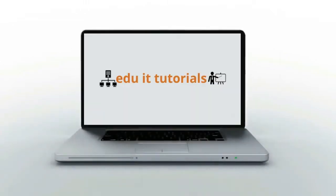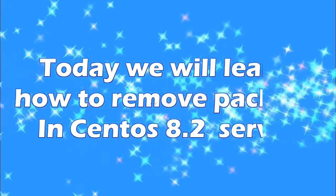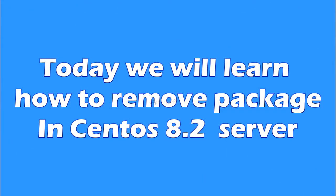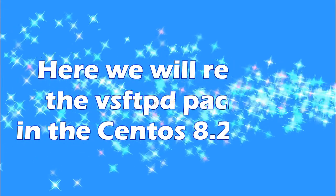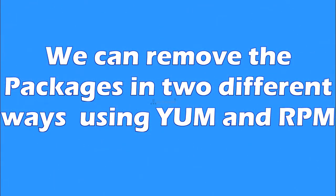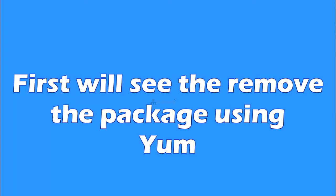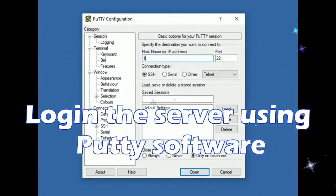Welcome to EduID tutorials. Please subscribe to my channel and click on the bell icon to get the latest updates. Today we will learn how to remove packages in the CentOS 8.2 server. In this example we need to remove the vsftpd package. We can remove packages in two different ways using DNF and RPM methods. First we will see how to remove the package using DNF. Login to the server using PuTTY software.